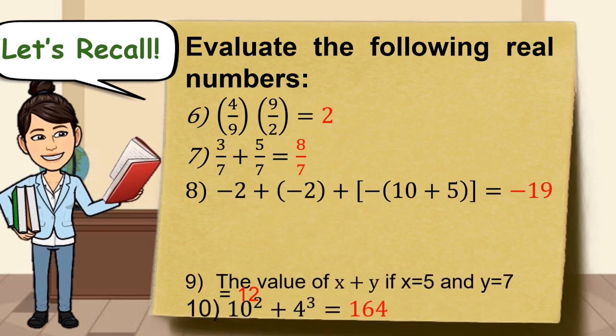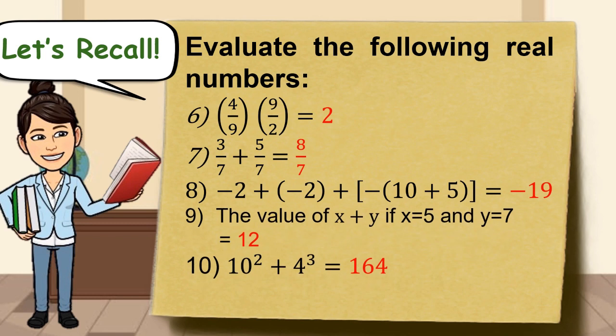Number 9, the value of x plus y if x is equal to 5 and y is equal to 7 is equal to 12. Number 10, 10 squared plus 4 raised to 3 is 164. Great job!